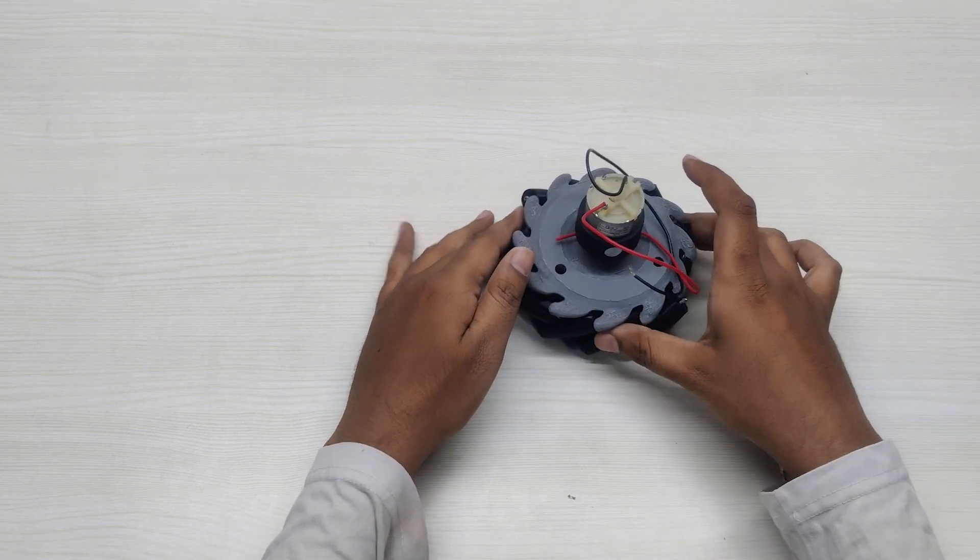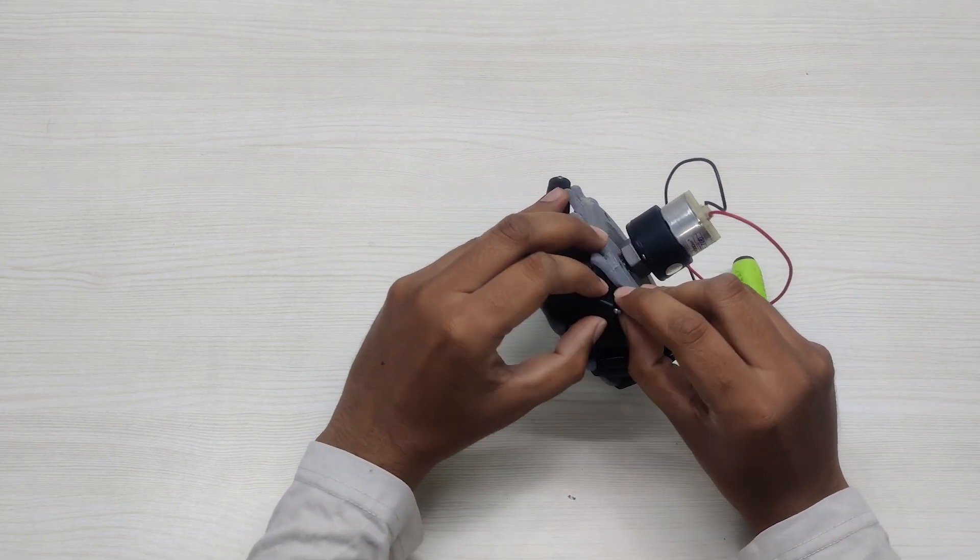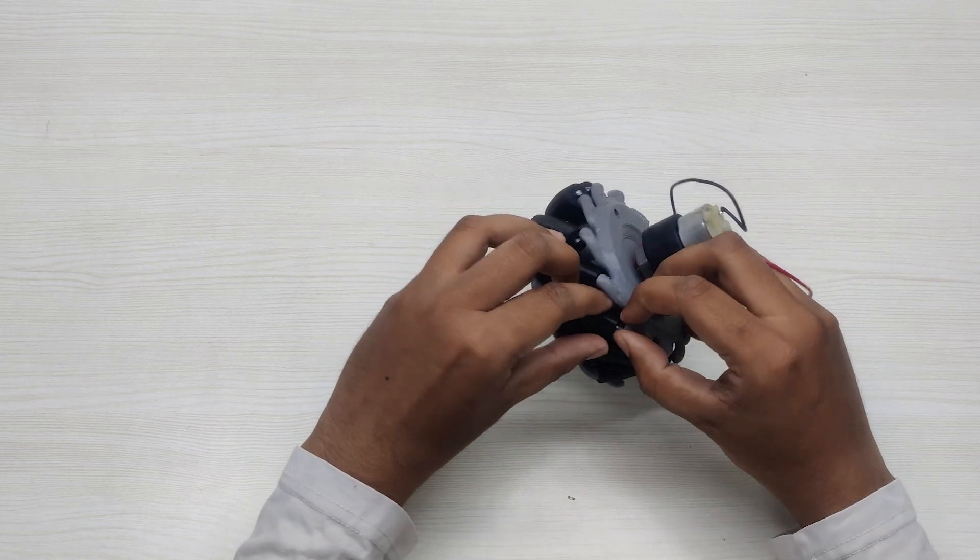Now carefully pull the outer end of the wheel and insert the shaft in it. Since these are 3D printed and are elastic in nature, thus it won't get damaged.